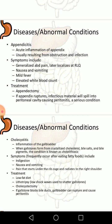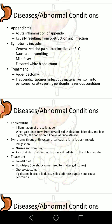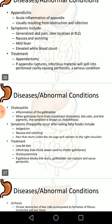Appendicitis is an acute inflammation of the appendix, usually resulting from obstruction and infection. Symptoms include generalized abdominal pain that later localizes, nausea, vomiting, mild fever, and elevated white blood cell count. Treatment is appendectomy — surgical removal of the appendix. If the appendix ruptures, infectious material will spill into the peritoneal cavity, causing peritonitis, which is a serious condition.